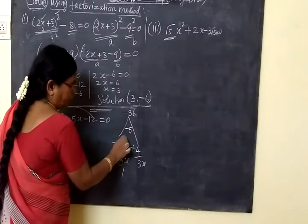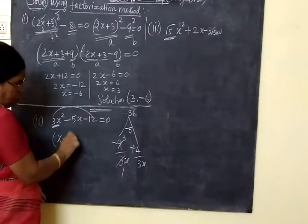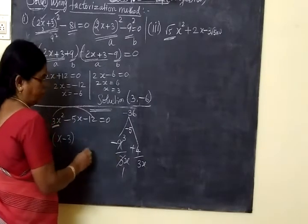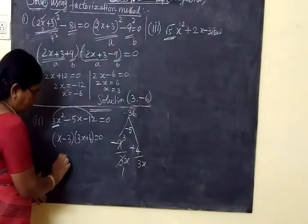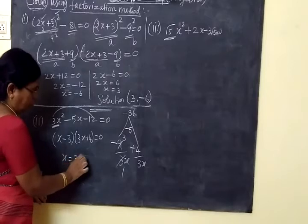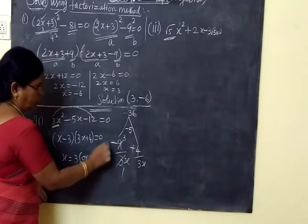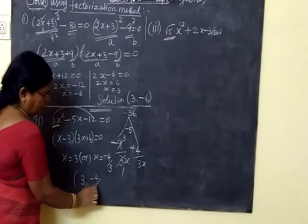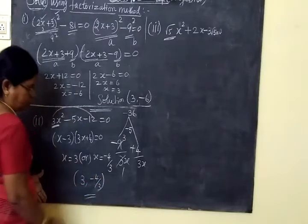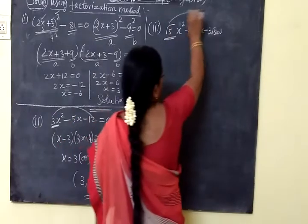3 times 1 times 3. It is cancelled again. So you are seeing x minus 3. The minus sign on, then 3x plus 4. 3x equal to 0. So x is equal to 3. X is equal to, plus 4 is the other side, minus 4 by 3. Therefore, the solution is 3, minus 4 by 3. So now we get the answer.